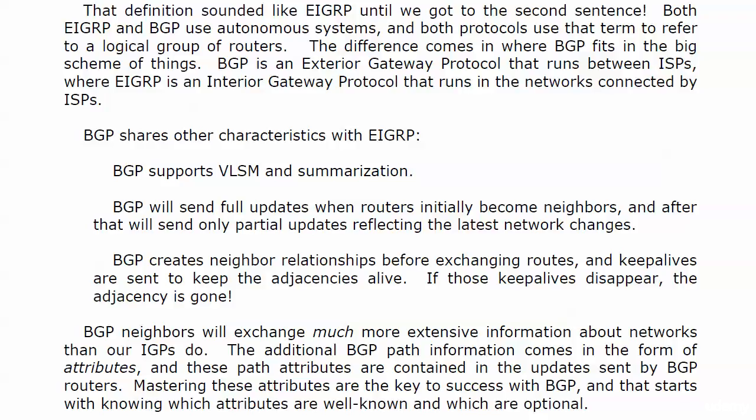BGP has peers and neighbor relationships — the same thing. They create these relationships before they exchange routes, and there are keep-alives sent to keep the adjacencies alive. If those keep-alives disappear, the adjacency is gone. BGP neighbors exchange much more extensive information about networks than our IGPs do. The additional BGP path information comes in the form of attributes, and these path attributes are contained in the updates sent by BGP routers. We're going to master these attributes, especially the fundamental ones, because they are the key to success with BGP.